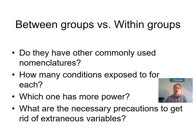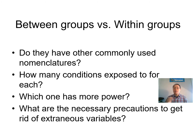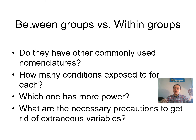To get rid of extraneous variables in between groups design, you must make sure your control and experimental groups are comparable at baseline before the manipulation. If assignment is not random, you might have two groups that are very different even from the start — that's one of the biggest problems. In within groups design, the subjects serve as their own control across conditions, but you have to be careful about time passage between conditions, which we'll discuss in the next lecture.